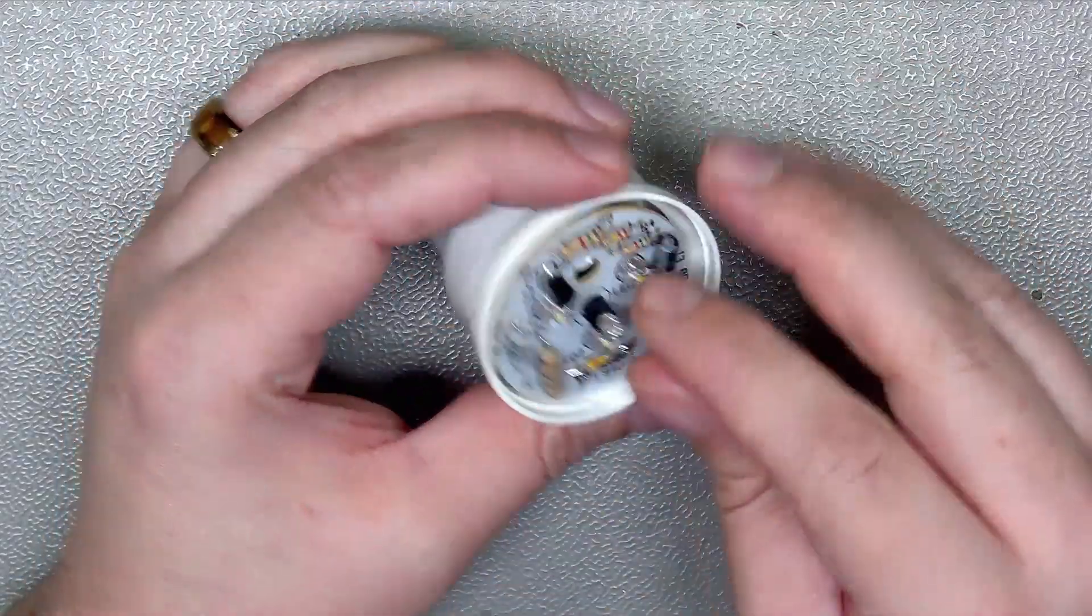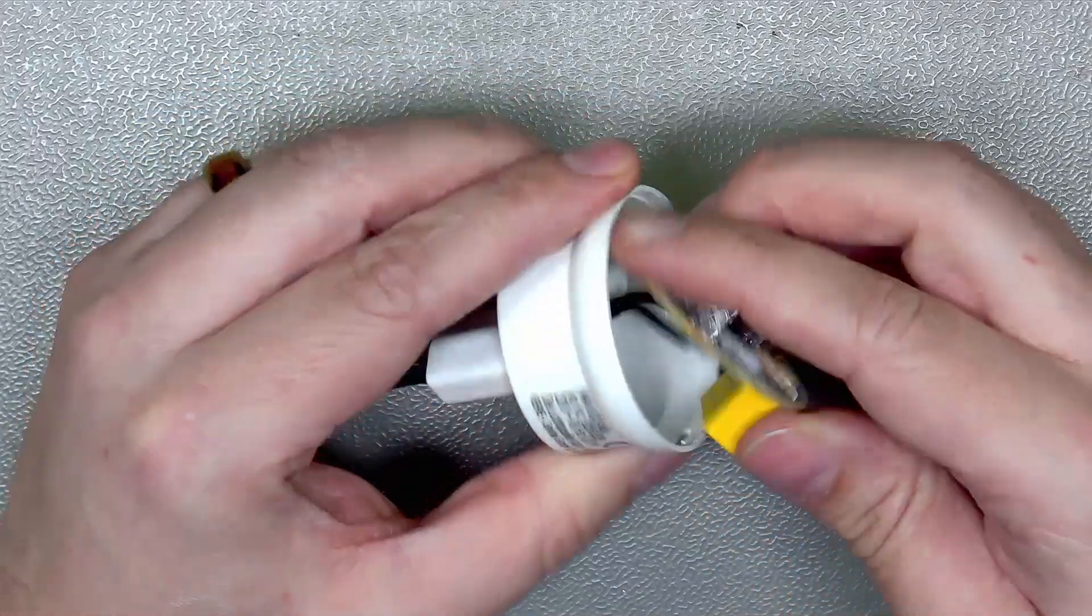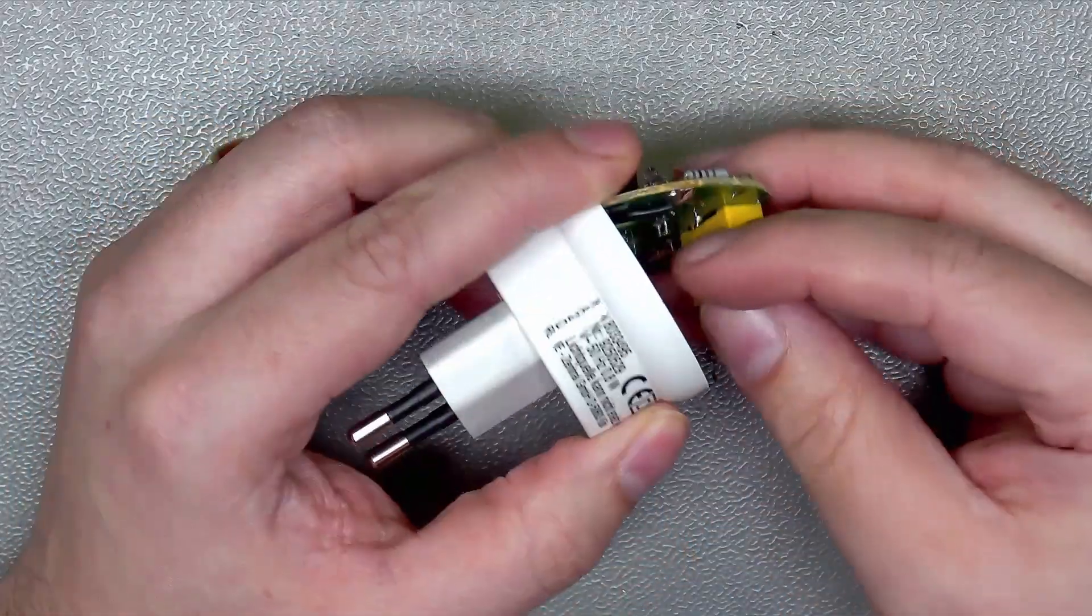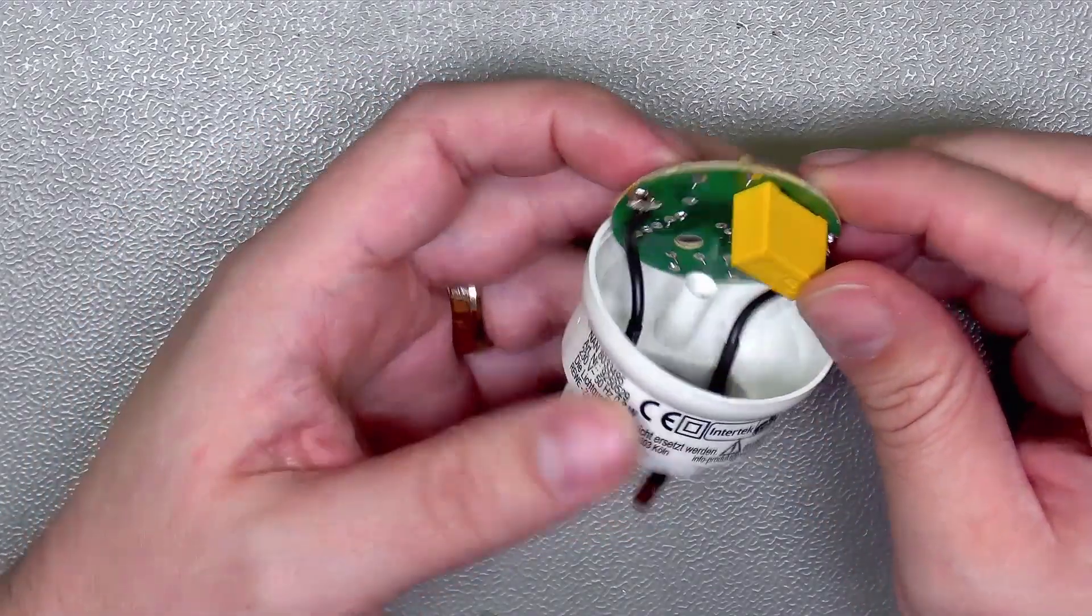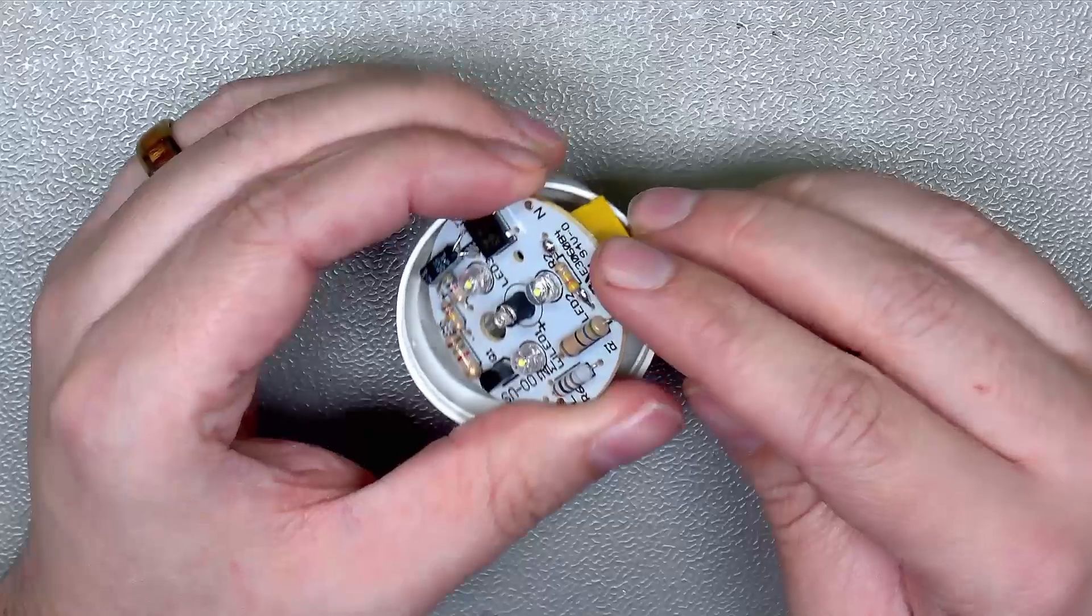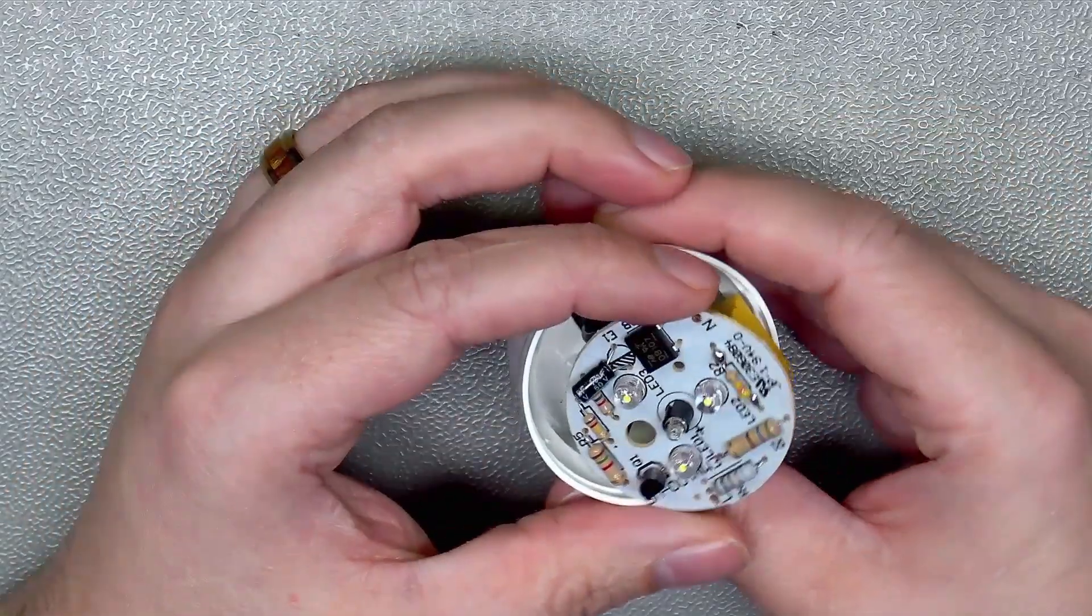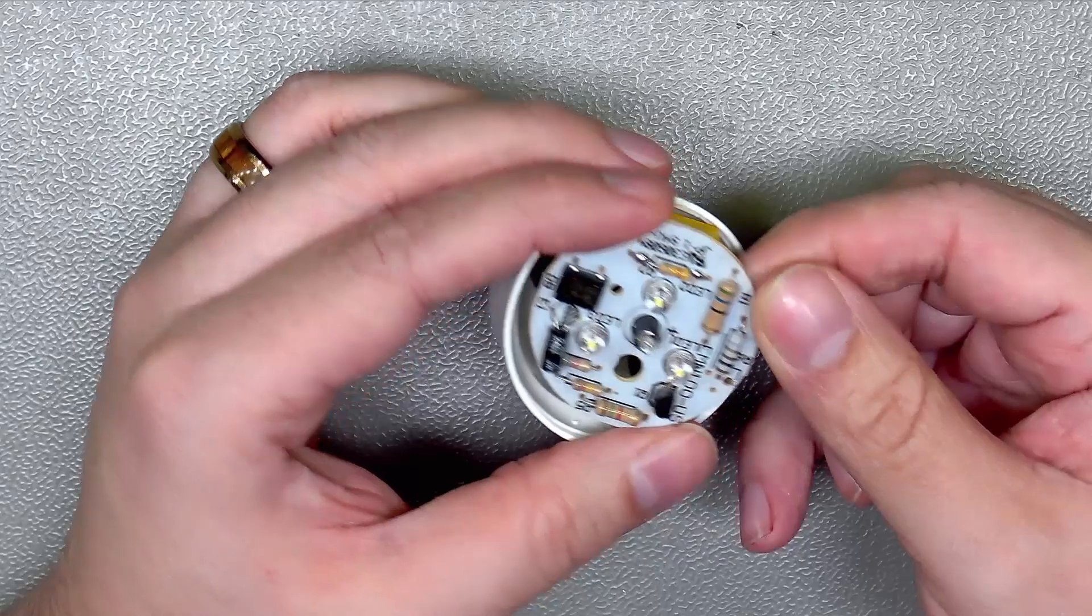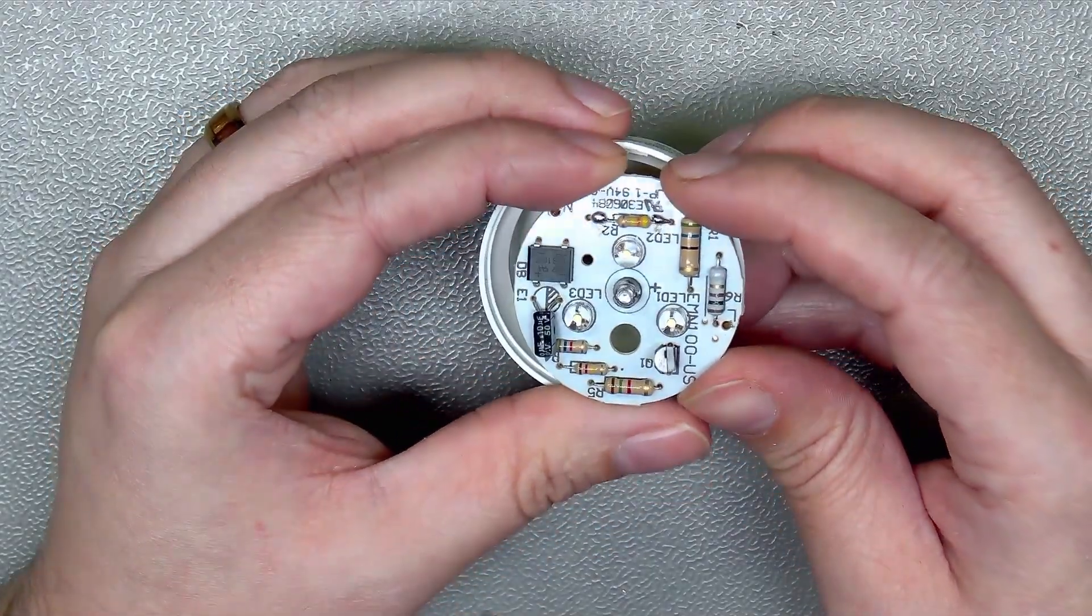But yes, so far this is quite a nice PCB. We have a big capacitor on the bottom side which is probably in series, and this is the discharge resistor over that one. Yeah, I would say that we should reverse engineer this one.